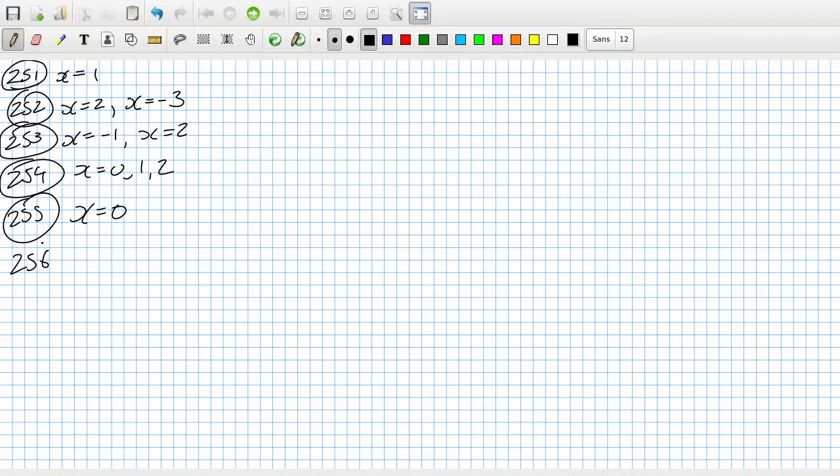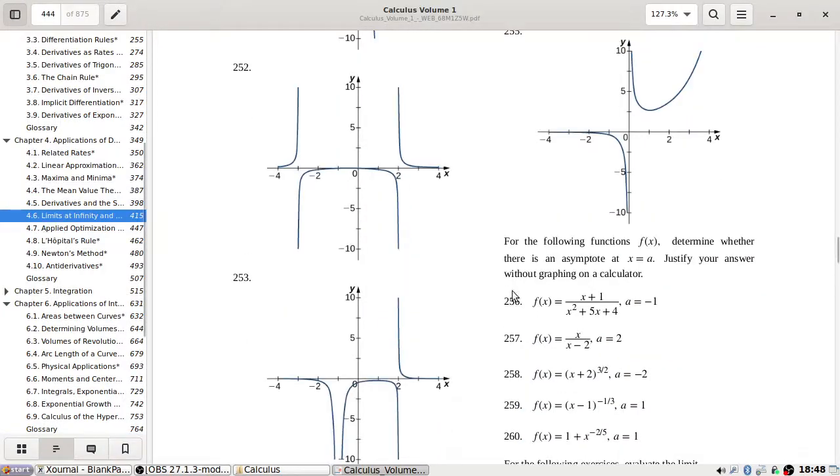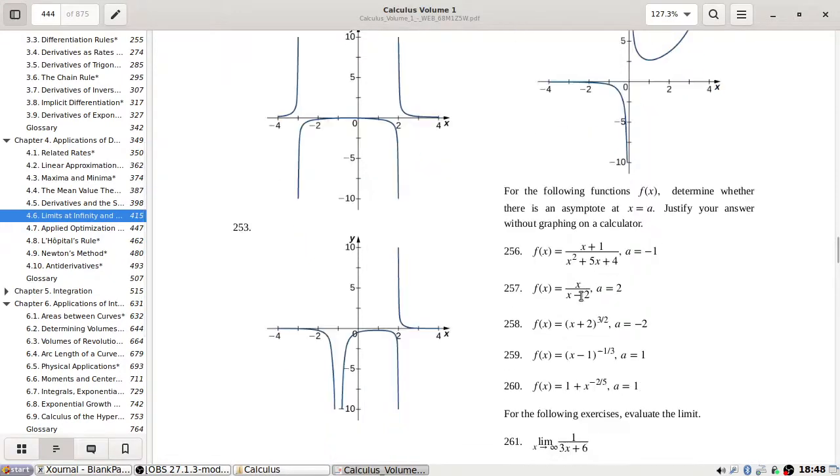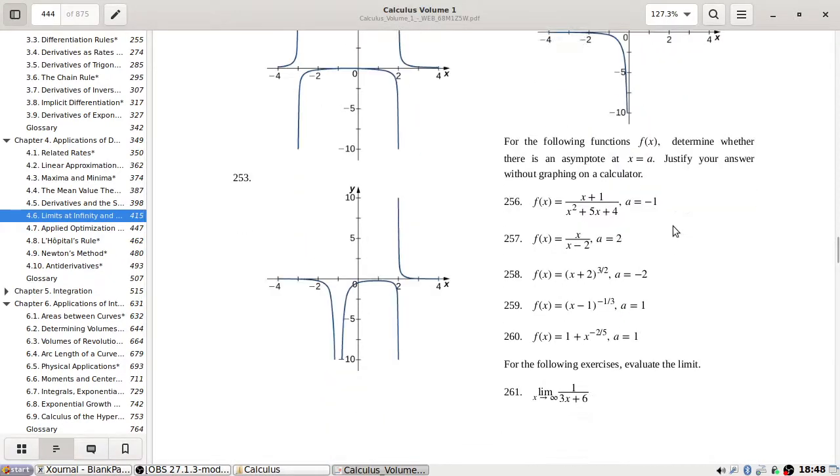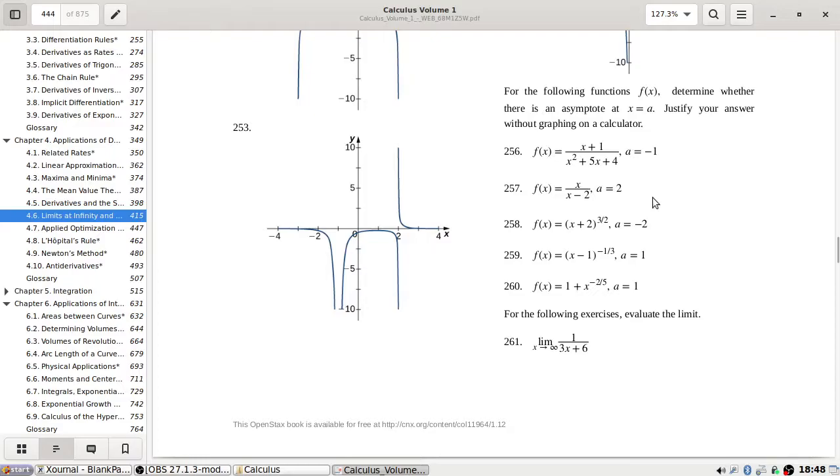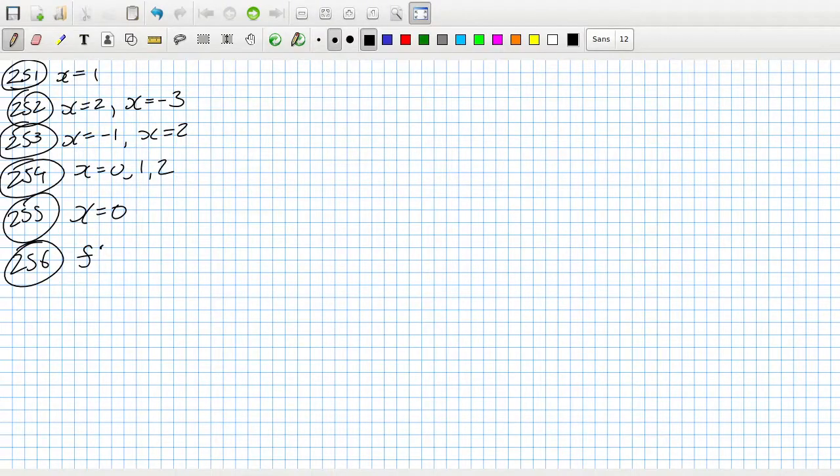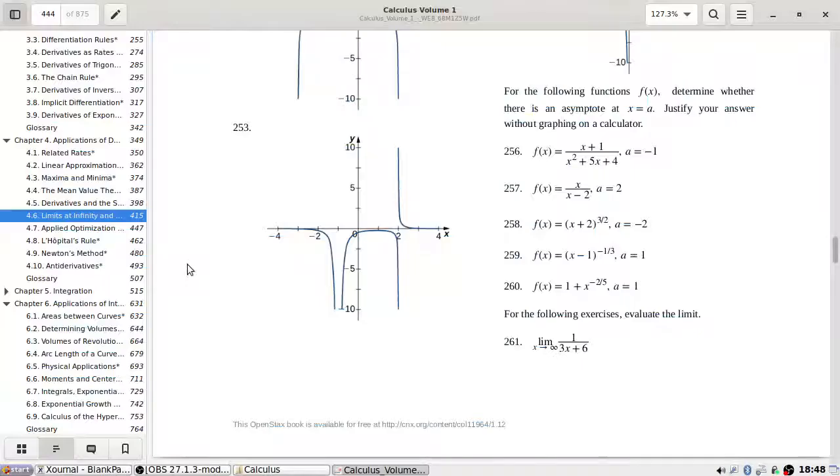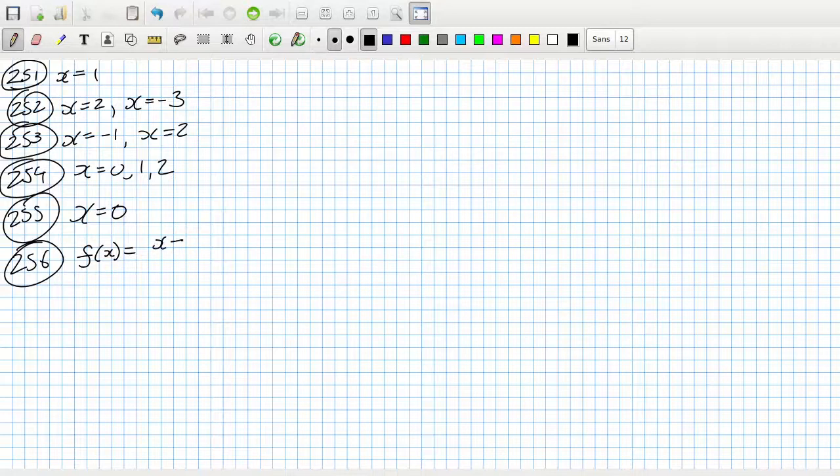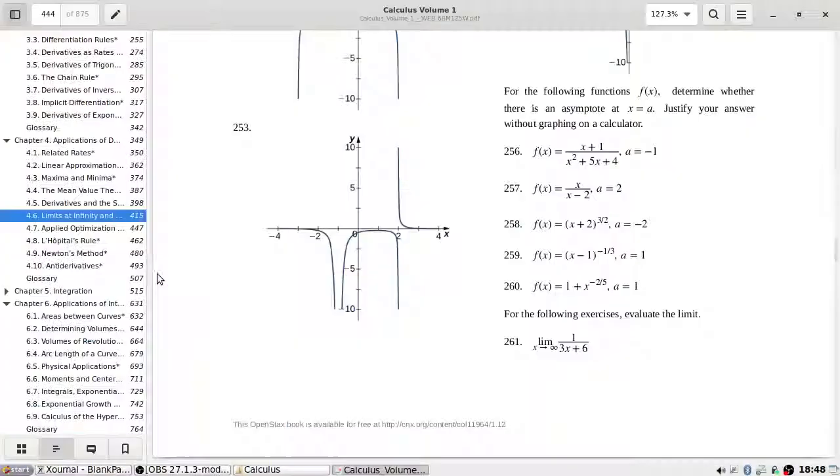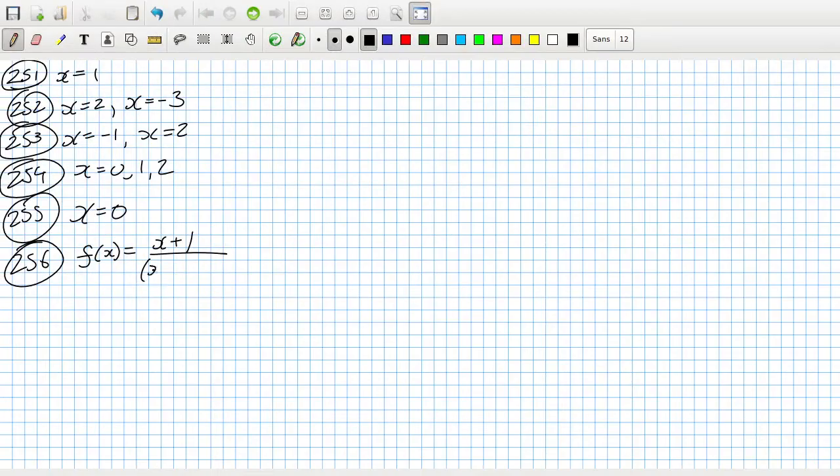Okay, 256: For the following functions, determine whether there's an asymptote at a. Justify your answer. So f of x equals x plus one over...